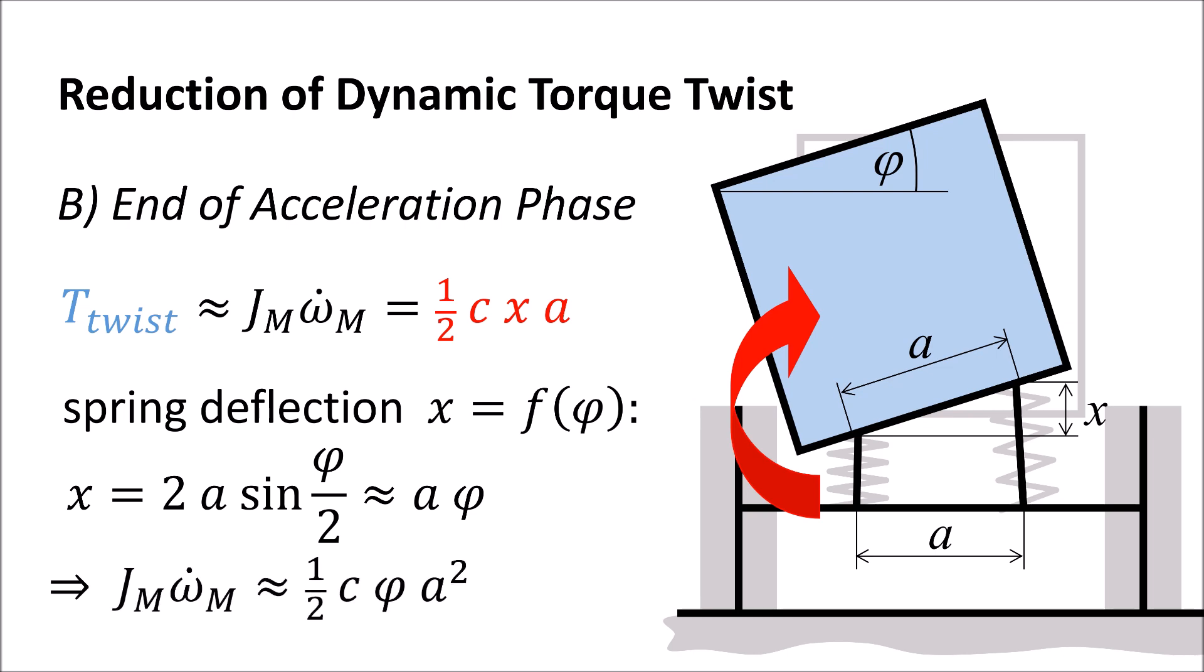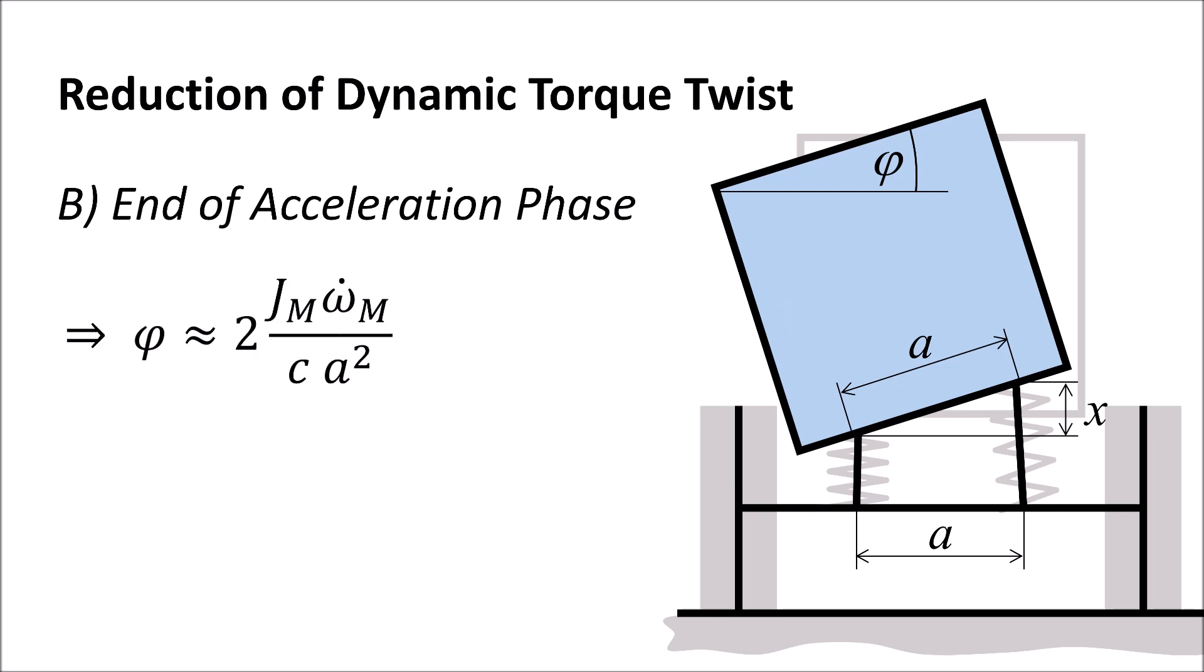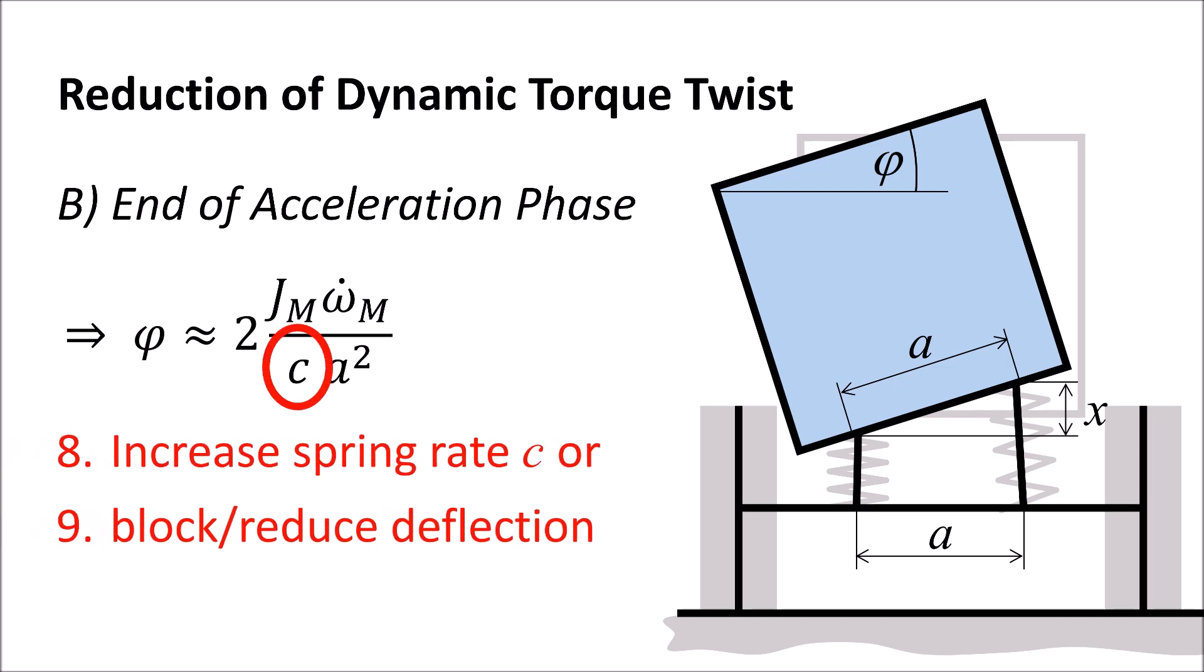The torque twist expressed by the tilting angle phi for this static condition can be further reduced by only eighth, increasing spring rate C or ninth by blocking spring deflection. And tenth, by increasing the lateral distance between the springs.